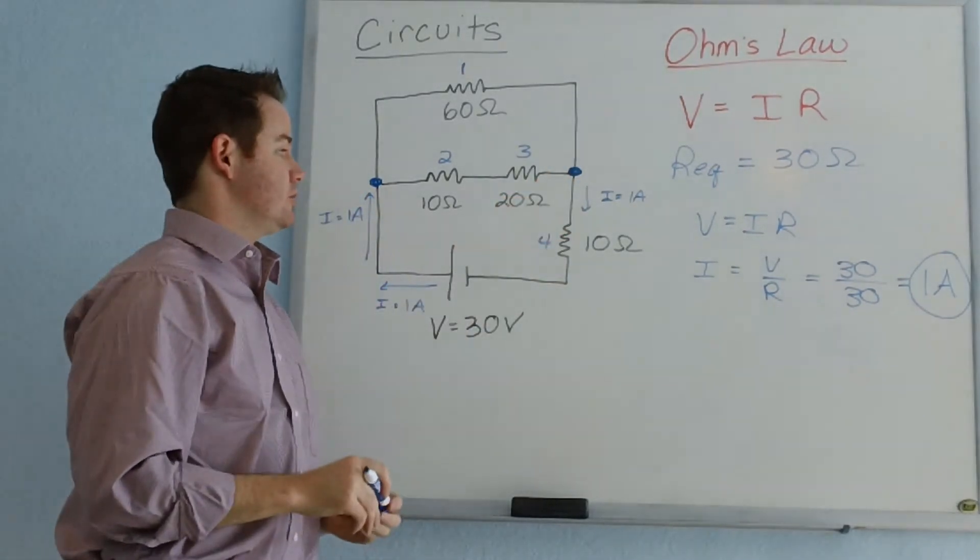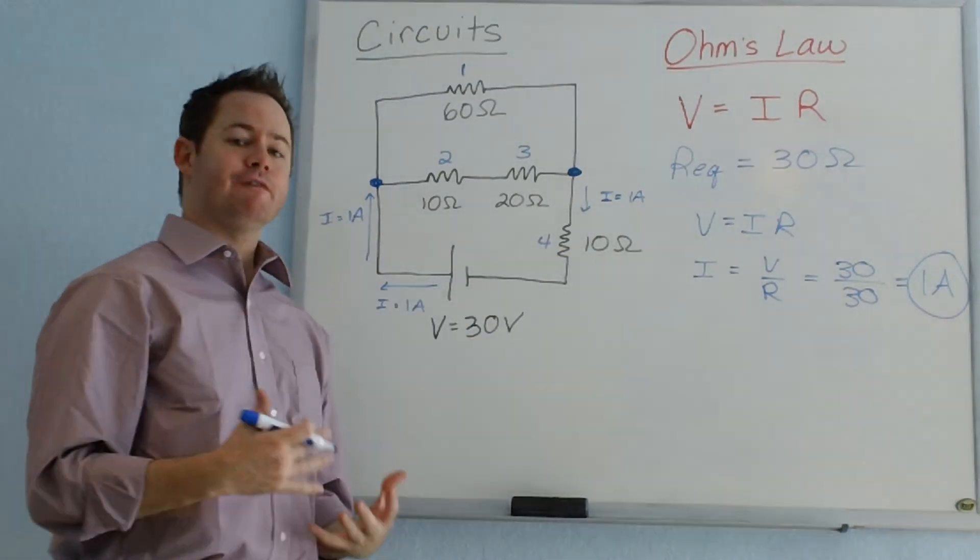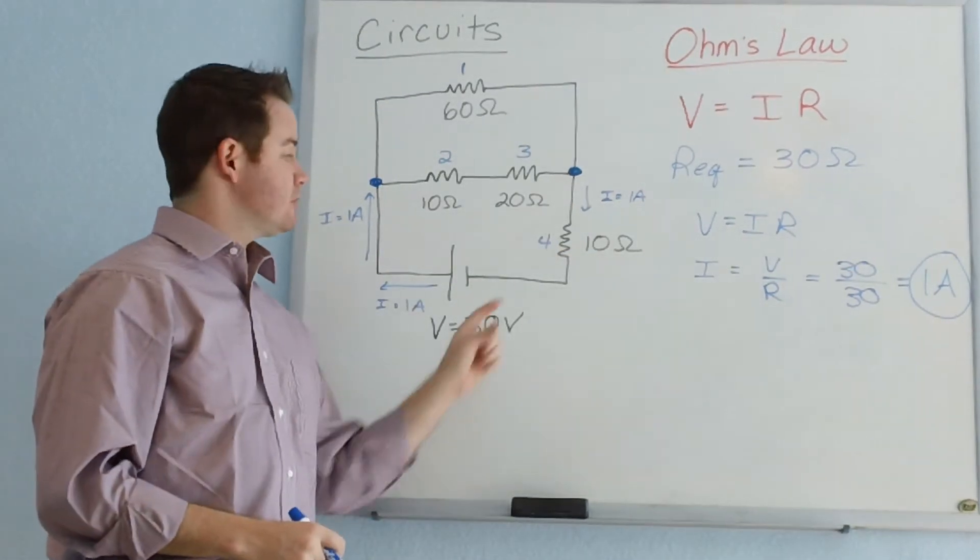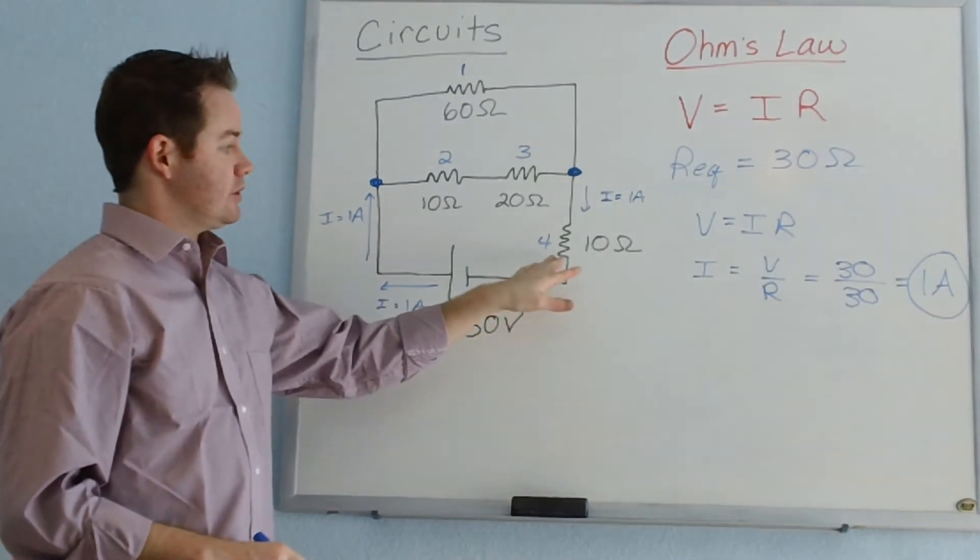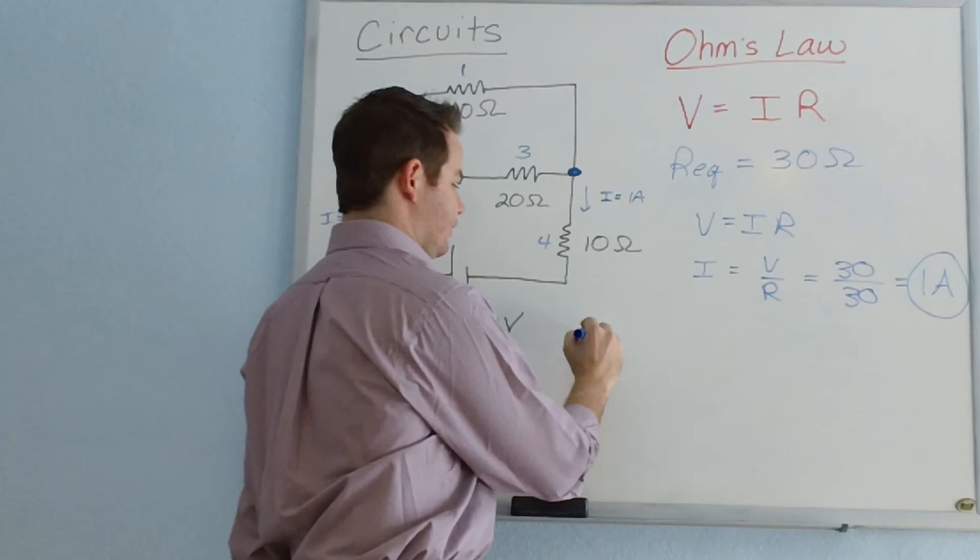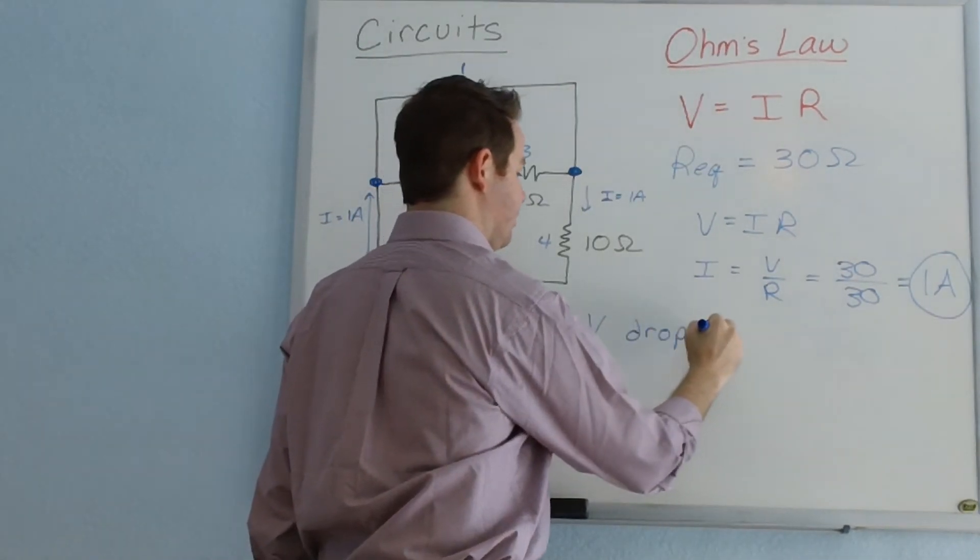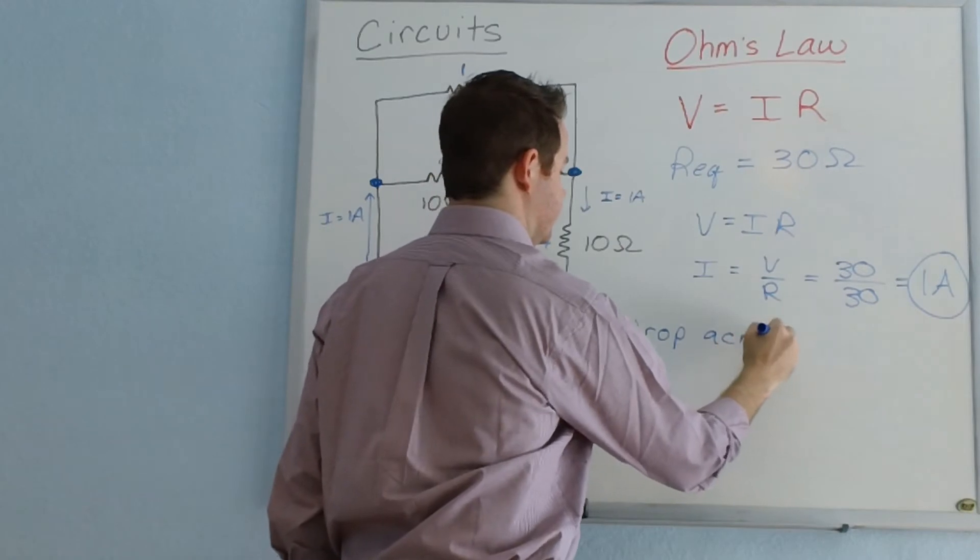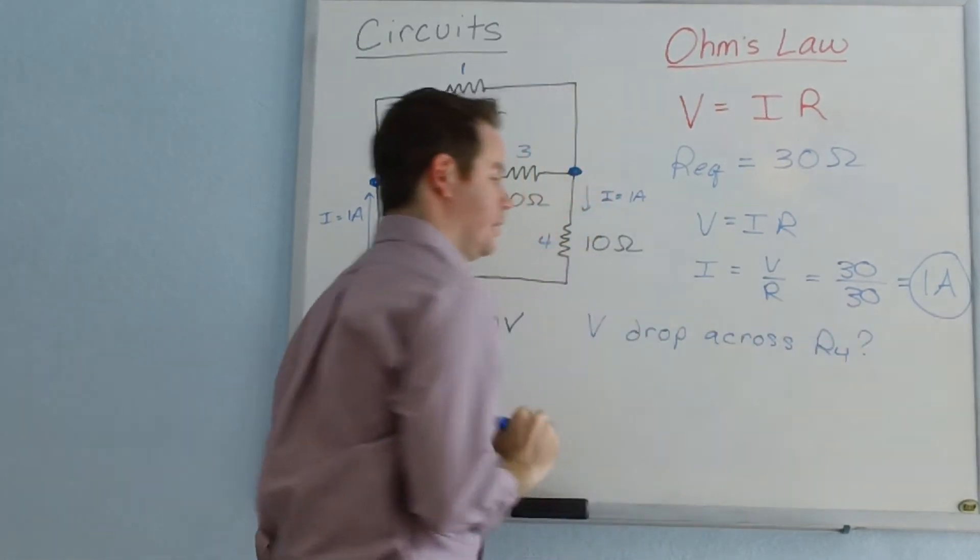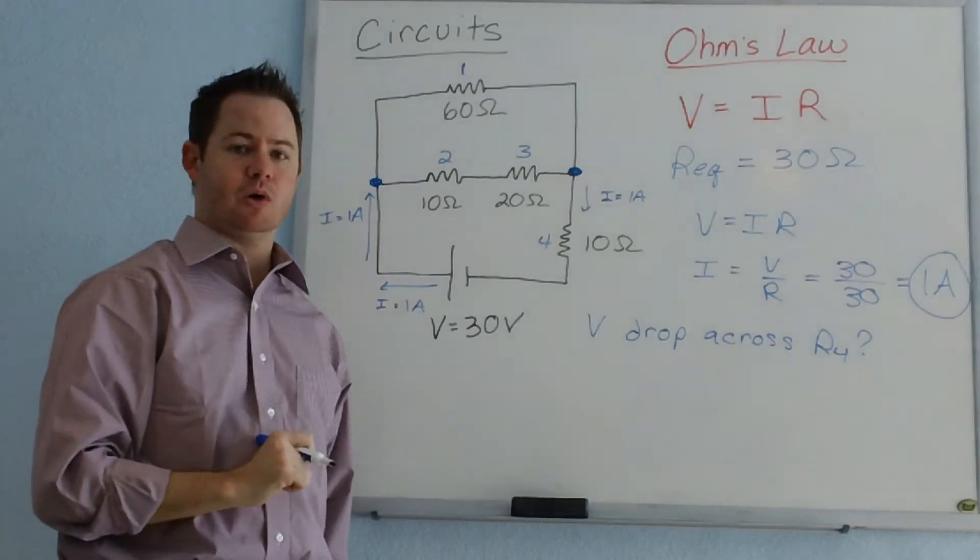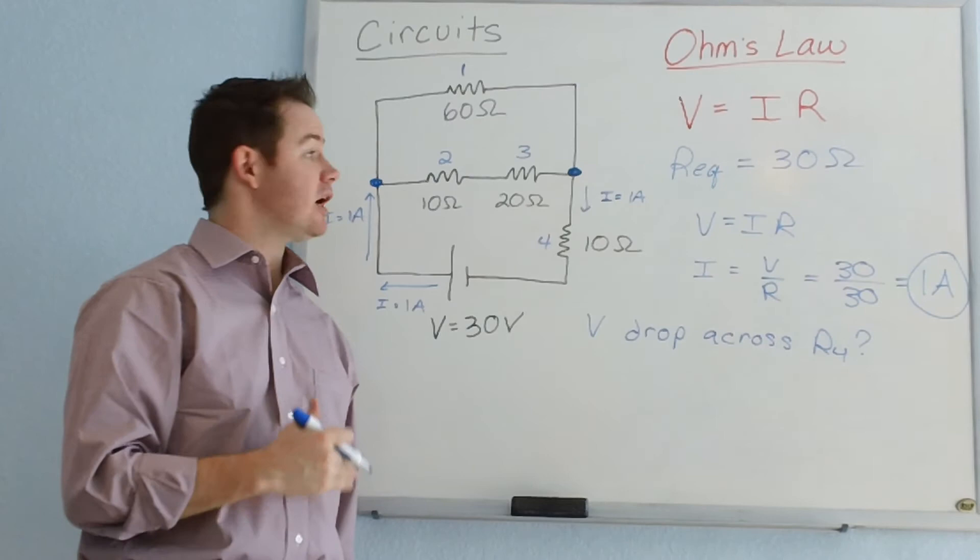So the first question for a specific resistor that we can answer is the voltage drop across resistor number 4. And that's the phrasing that you'll see used: voltage drop across a particular resistor. And in this case, we want the voltage drop across R4. So we're still going to use Ohm's law. We still use V equals IR, except now we're going to plug in slightly different values.